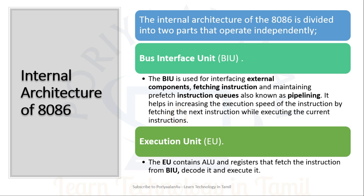The 8086 is completely divided into two units. First is the Bus Interface Unit and the other is the Execution Unit. The Bus Interface Unit handles external components, fetches instructions, and maintains a prefetch instruction queue, also known as a pipeline. This pipelining is an advantage of the 8086 — while the CPU executes the current instruction, the next instruction is already in the queue, making processing speed faster. Pipelining is managed by the BIU.